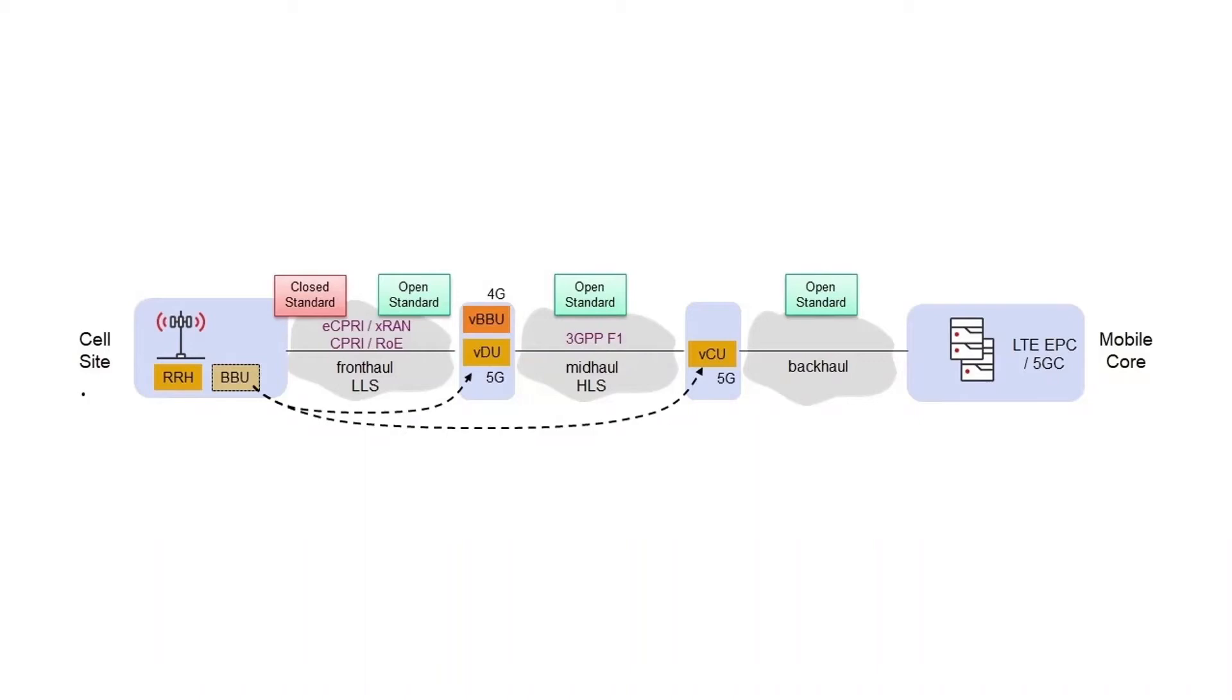In 5G, the mobile core is called the next generation core. Essentially, the functions are the same, but there's greater separation of the control and data traffic. And the main difference is that they don't want all the traffic to have to be backhauled to the core to be gatewayed between the cellular network and the data network. In 5G, that functionality should be available closer to the edge.